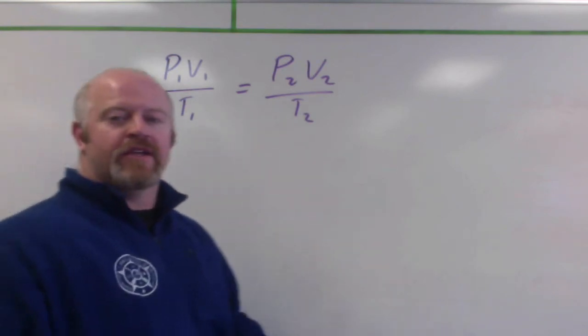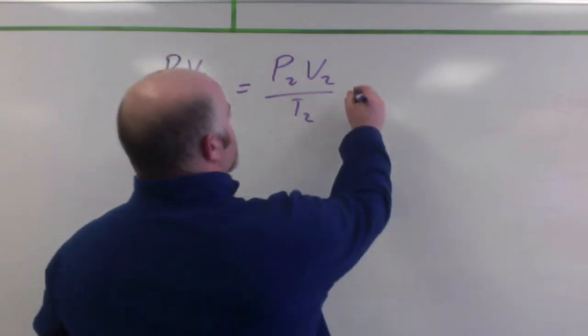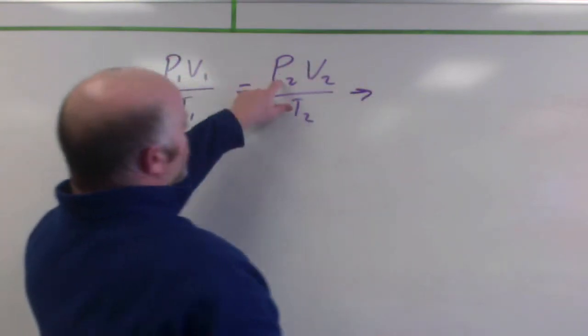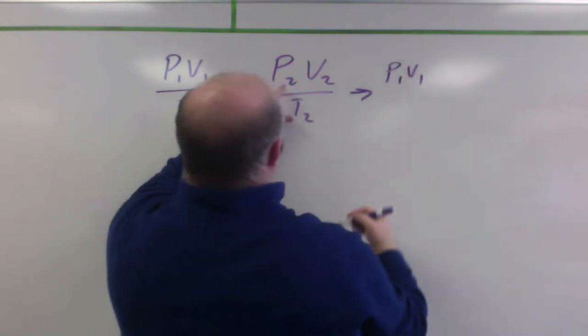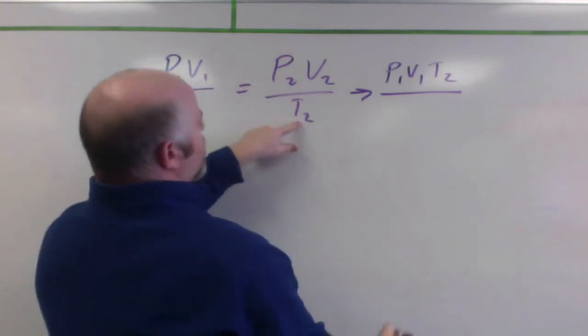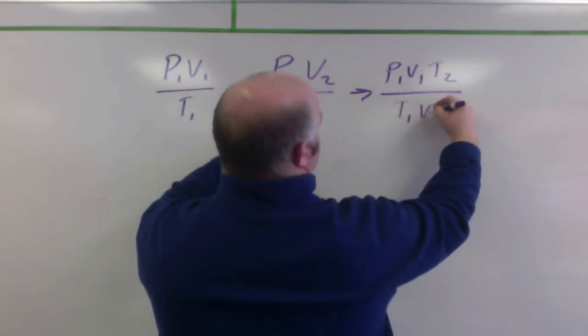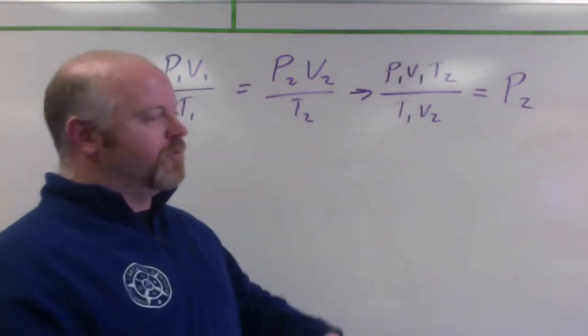And I'm going to arrange this because we're solving for the pressure in both cases. So when we rearrange this, we're solving for our final pressure. So we can say that P1 times V1 times T2 all divided by T1 V2 will equal our ending pressure.